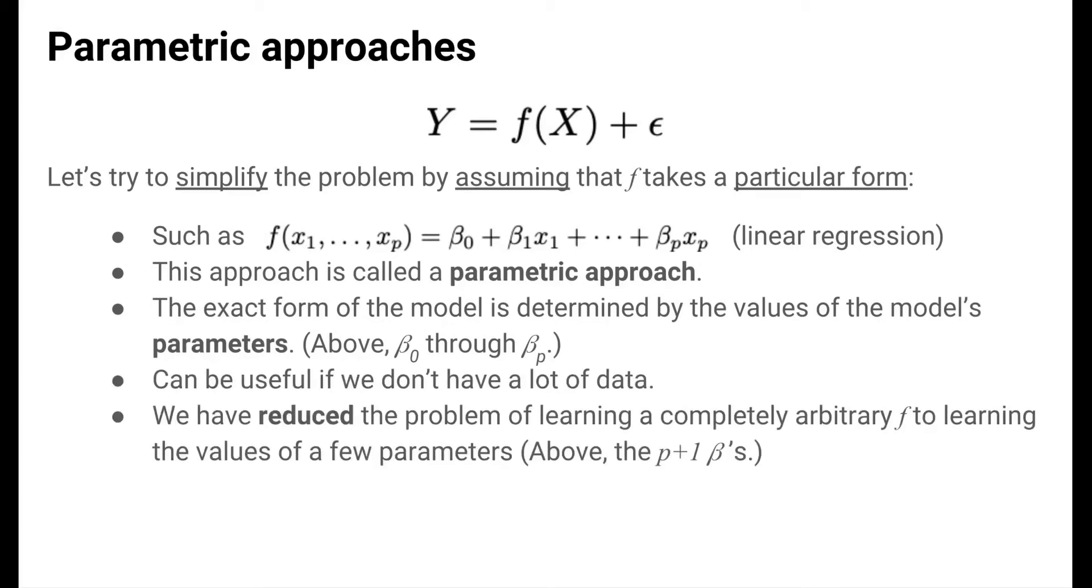Parametric approaches are useful if we don't have a ton of data because we've simplified the problem. We've reduced the problem of learning a completely arbitrary function to learning the values of a handful of parameters. In the linear regression model here, learning f amounts to learning the values of the p plus 1 beta coefficients. This is easier than trying to sort through the infinitely many possible functions that are not linear combinations of the predictors.